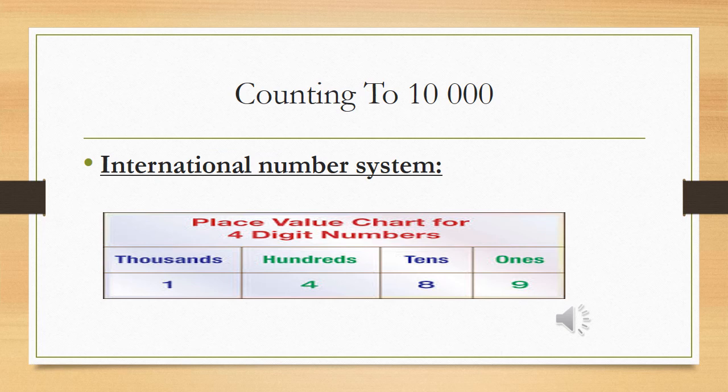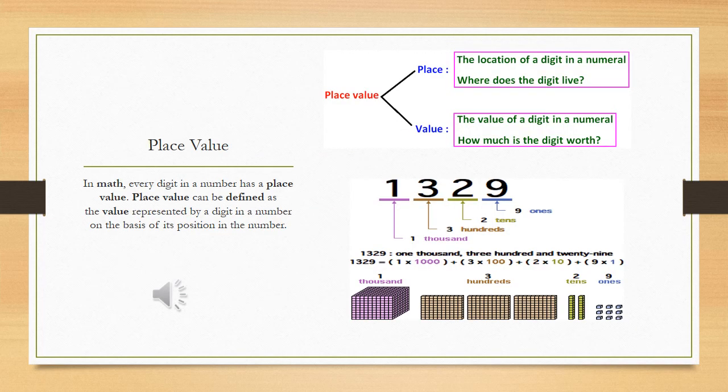Now we have to describe 1489 by the help of international number system or place value. We start from right to left - it is a basic rule of mathematics. 9 is the ones, 8 is the tens, 4 is the hundreds, and 1 is the thousands. In ones there is only one digit. In tens there are two digits. In hundreds there should be three digits, and in thousands there should be four digits and so on. So what we are saying this number as is 1489.